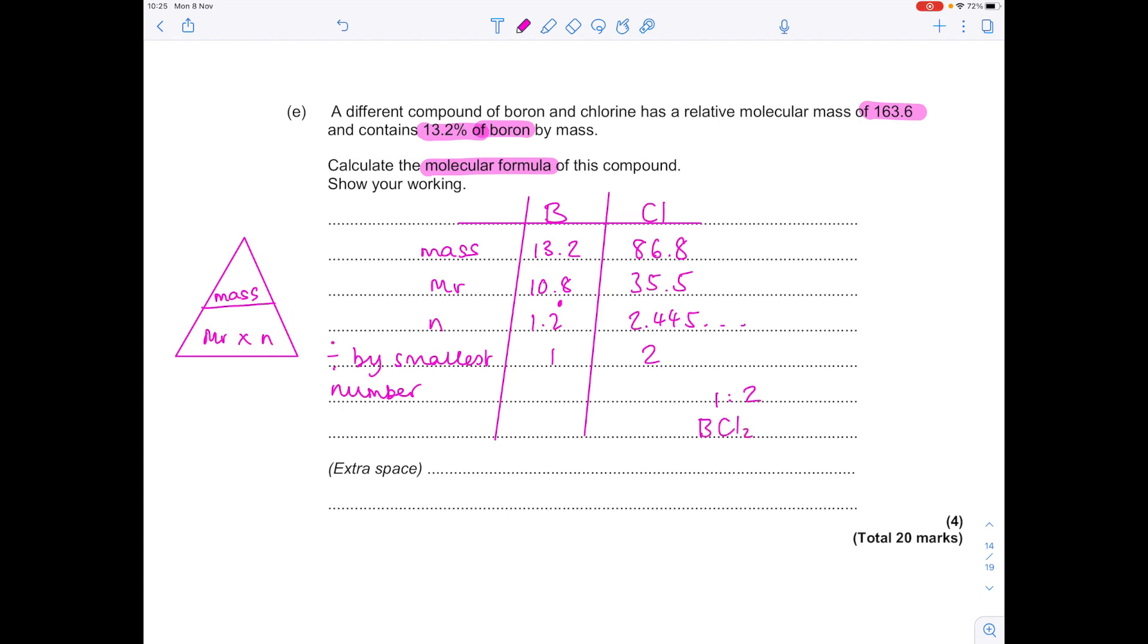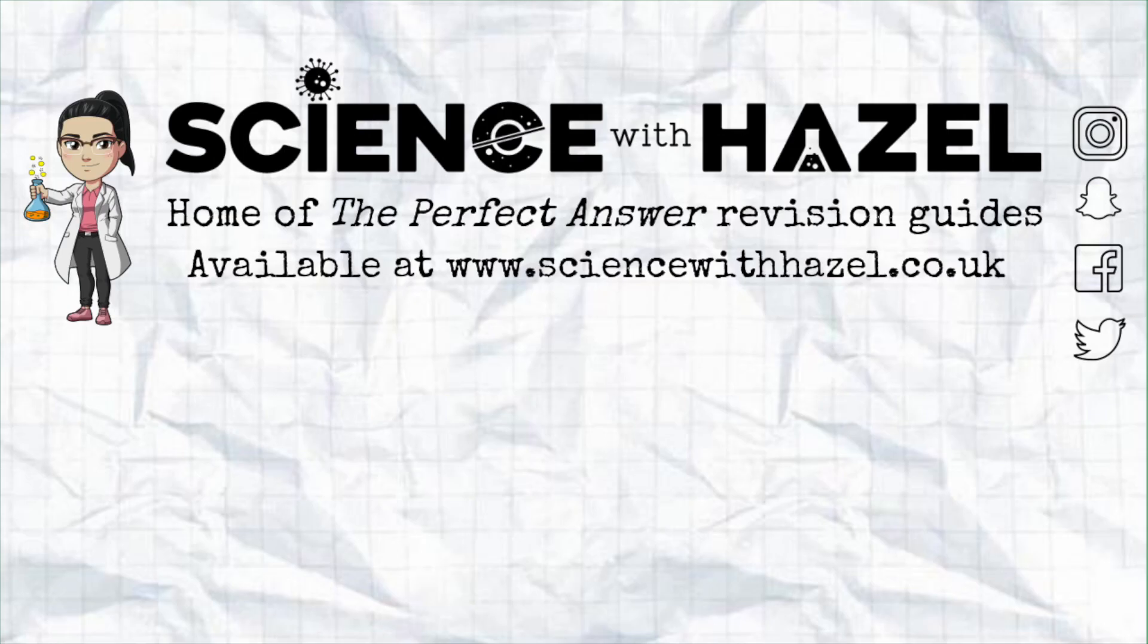Now, we need to work out if that's the same as our molecular formula. We know that the molecular formula was 163.6. So, what you need to do now is find the molecular formula of the compound you've just found. That's 81.8. That's actually half of the number they've given us, which tells us that our molecule is twice as heavy. So, we just need to double it all. So, it becomes B₂Cl₄.